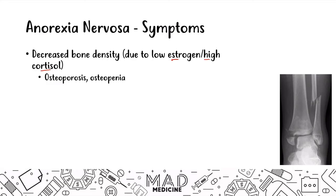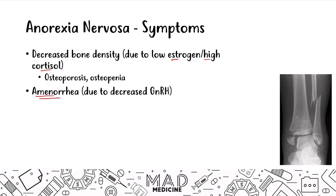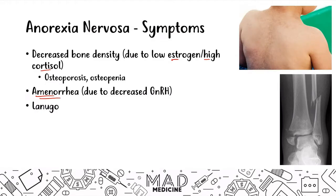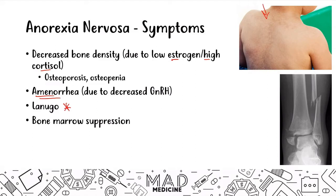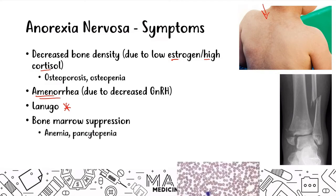A young female presenting with multiple fractures at different stages of healing should prompt you to consider anorexia, not just abuse — always check the weight. Another hallmark is amenorrhea, due to decreased GnRH production. Patients also present with lanugo — fine, soft, brittle hairs normally seen on babies but abnormal in adults. Due to dietary restriction, bone marrow suppression leads to anemia and pancytopenia. Electrolyte disorders also occur, causing bradycardia and hypotension.